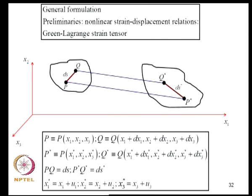Rather than deriving geometric stiffness matrices for each structural type individually (3D beam, plate, etc.), we can start from a general 3D solid formulation and specialize to specific structures. To do this systematically we need nonlinear strain-displacement relations, so we review the Green-Lagrange strain tensor. We consider a Cartesian coordinate system X1, X2, X3 with a body supported and loaded by surface tractions and body forces.